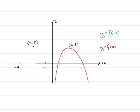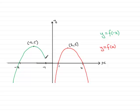So we just sketch in the mirror image of this. It's going to go through these points — coming up through here and through that point there. So a mirror image of f of x in the y-axis.